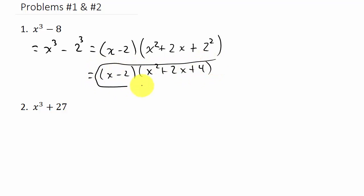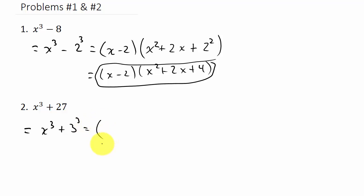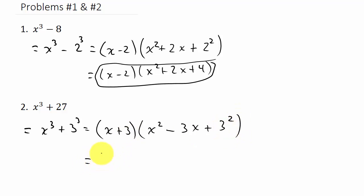Now x cubed plus 27. We can write this as the sum of two cubes: x cubed plus 3 cubed. Drop the exponents to get x plus 3. Then square the first term to get x squared, change the sign, multiply x times 3 to get 3x, always plus, then square the last term to get 9. So the answer is (x plus 3)(x squared minus 3x plus 9).